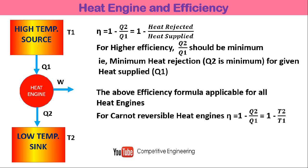For a Carnot reversible heat engine — a special type of theoretical heat engine that is reversible in nature — the efficiency equation is eta equals 1 minus Q2 by Q1, but it can also be written in terms of temperature as 1 minus T2 by T1, where T2 is the lowest temperature and T1 is the highest temperature. That is 1 minus temperature of the sink divided by temperature of the source. Remember: for all heat engines use 1 minus Q2 by Q1, but 1 minus T2 by T1 is for Carnot reversible heat engines only.